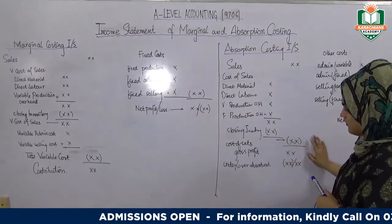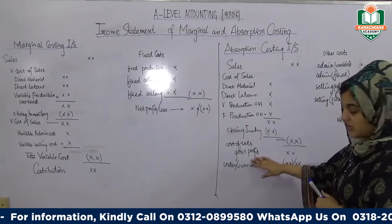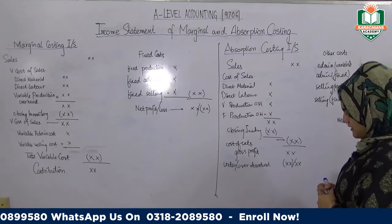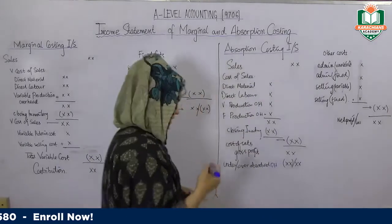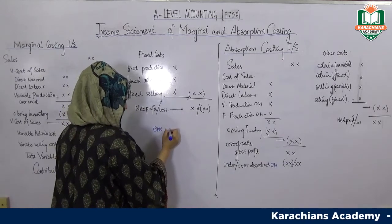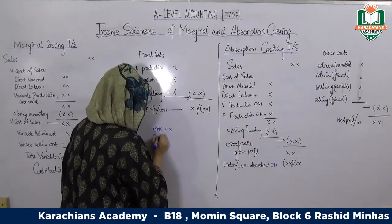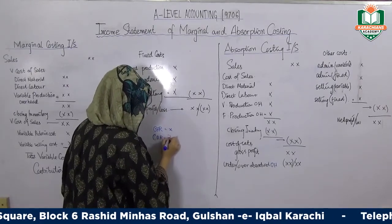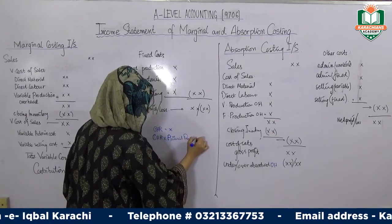After subtracting closing inventory you get the cost of sales, then you subtract that from sales to get gross profit. After gross profit, you add or subtract your under or over absorbed overhead. The under or over absorbed overhead comes from comparing the OAR multiplied by actual production against the actual overhead incurred.